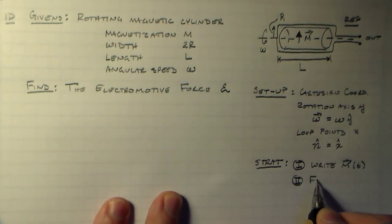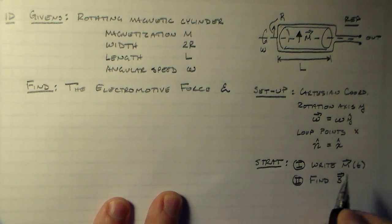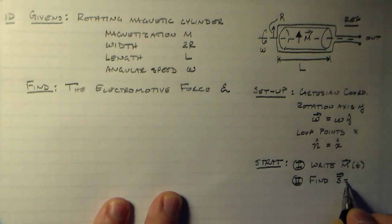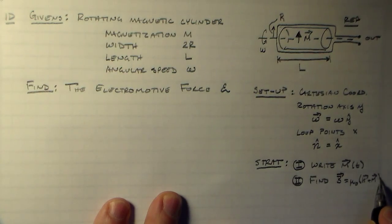Two, we'll have to find b. We'll need to know the magnetic field and we'll get that from mu naught h plus m.